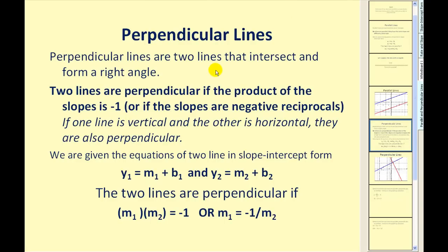Perpendicular lines are lines that intersect and form a right angle, or a 90 degree angle. Two lines are perpendicular if the product of the slopes is negative 1, or if the slopes are negative reciprocals. The only exception to this rule is if one line is vertical and the other is horizontal — they're also perpendicular. So if the lines are in slope-intercept form, they're perpendicular if m1 times m2 equals negative 1, or if they're negative reciprocals.